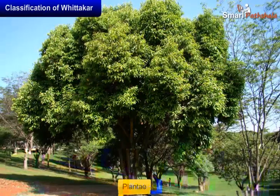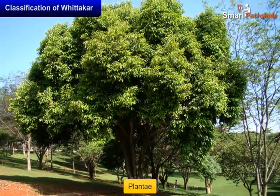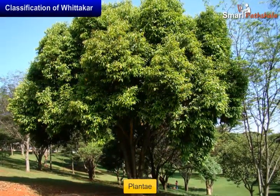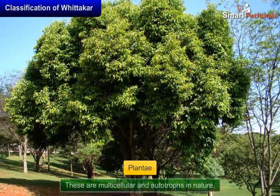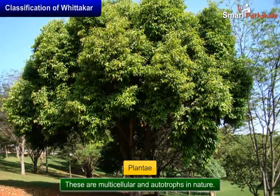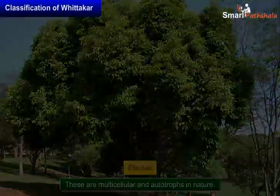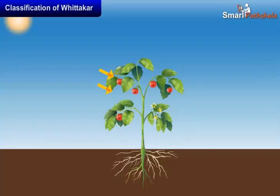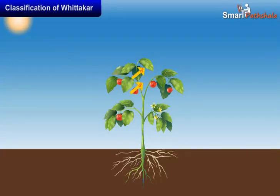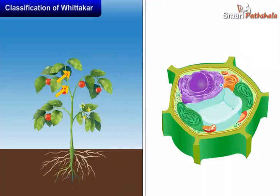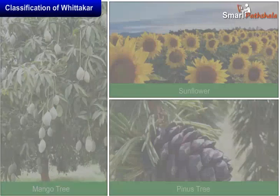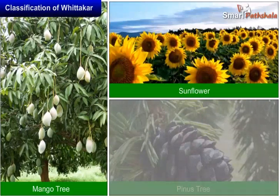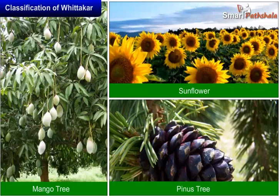4. Plantae. These are multicellular and autotrophs in nature. Presence of chlorophyll is a distinct characteristic of plants, because of which they are capable of doing photosynthesis. Cell wall is present. Examples: Mango tree, Sunflower, Pinus tree, etc.